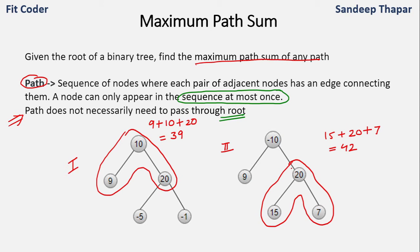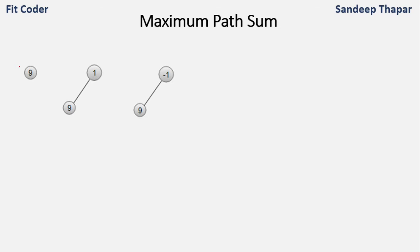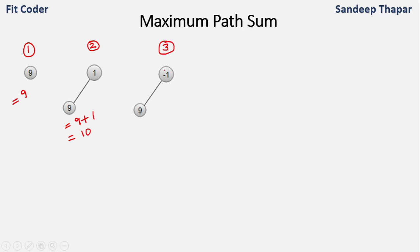Let's see the different cases that can be possible. The first case is when the tree has only one node — in that case, that node is the maximum path sum, so 9 would be the answer. The second case is when all nodes are positive; for example 9 and 1, the path sum is 10. The third case is when there are two nodes but one is positive and one is negative — the maximum path sum is just the positive node, which is 9, since adding the negative node gives only 8.